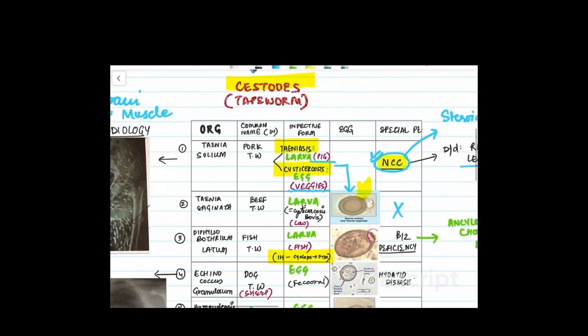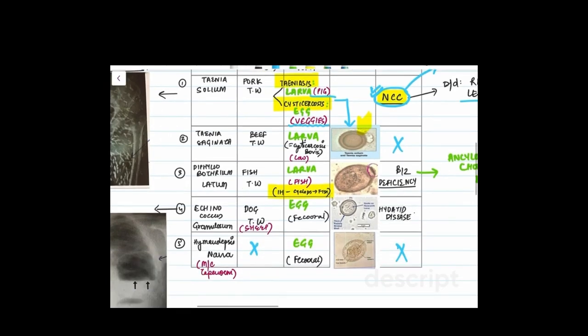Now talking about the other organisms, the second organism is Taenia saginata which is the beef tapeworm. The infective form is larva which we get from the cow. We have Diphyllobothrium latum which is the fish tapeworm and the larva is taken in through the scales of the fish. This question is commonly asked that Diphyllobothrium latum has two intermediate hosts: the first is Cyclops and the second is fish.